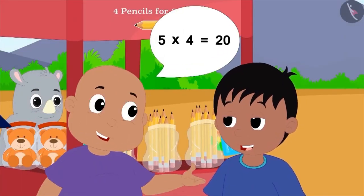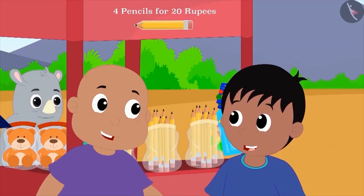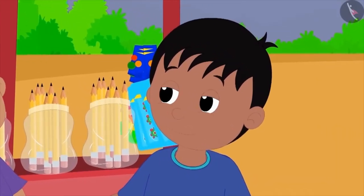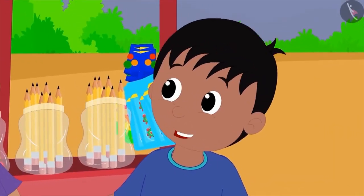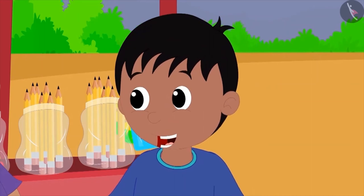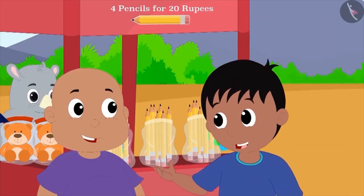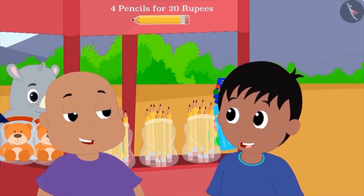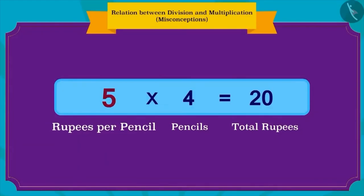Raju got excited when he heard about the relation between division and multiplication. Raju said to Bablu that he can write this multiplication like this also. Five rupees per pencil, and four pencils. So, the total amount is twenty rupees.